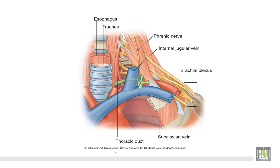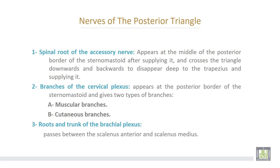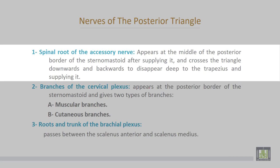This is the subclavian artery and this is the subclavian vein. The nerves of the posterior triangle: number one, the spinal root of the accessory nerve appears at the middle of the posterior border of the sternomastoid muscle, after supplying the sternomastoid, and crosses the triangle downwards and backwards to disappear deep to the trapezius, supplying it.